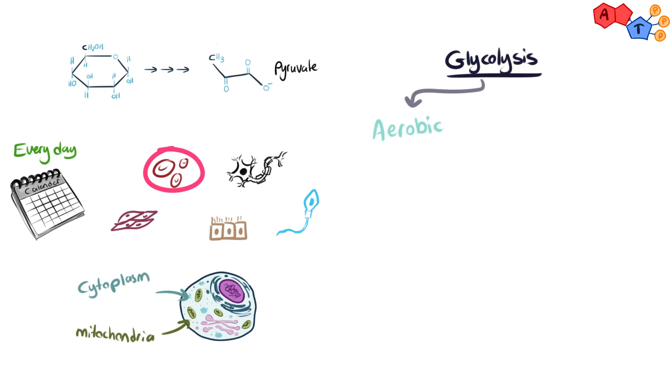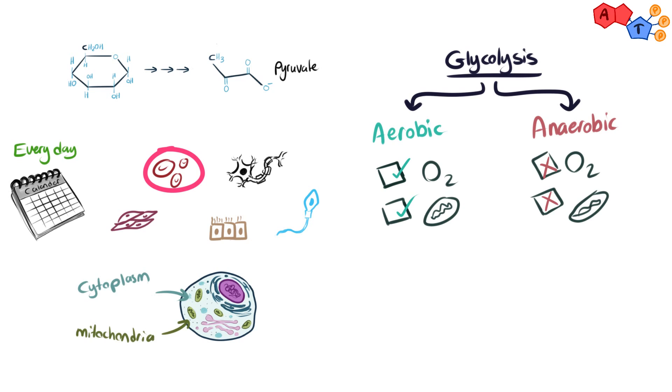Glycolysis can be aerobic, requiring oxygen to follow up with the next stages of cellular respiration, or anaerobic, occurring without the participation of oxygen. Anaerobic glycolysis happens in cells that lack mitochondria and in oxygen-deprived cells.